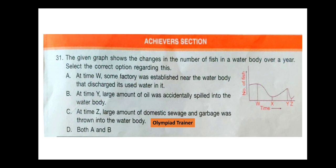The next section is the Achievers section. Question 31. The given graph shows the changes in the number of fish in a water body over a year. The correct answer is option D — both A and B. At time W, a factory was established near the water body that discharged its wastewater into it, causing fish numbers to decrease. At time Y, a large amount of oil was accidentally spilled into the water body, causing fish numbers to suddenly drop.